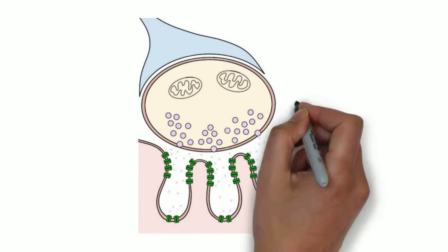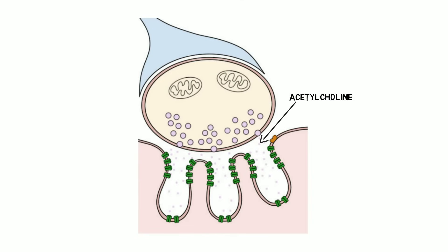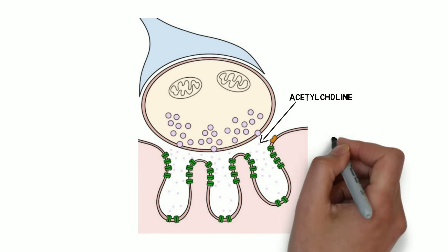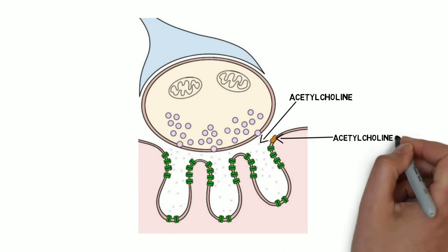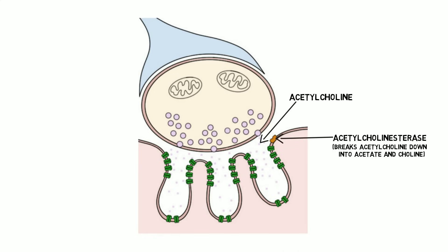The action of acetylcholine in the synapse is terminated by an enzyme called acetylcholinesterase, which breaks acetylcholine down into acetate and choline. The choline is then transported back into neurons to synthesize more acetylcholine.